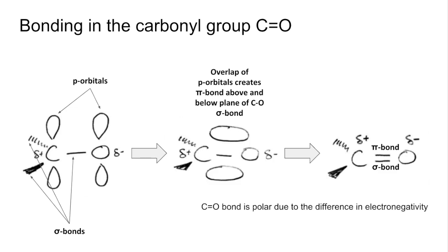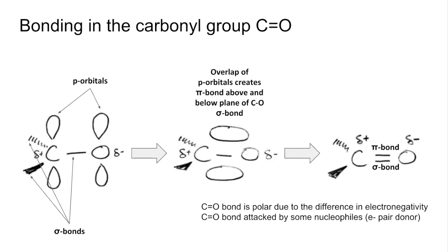The C double bond O is polar — notice the dipole shown across it. Oxygen is more electronegative than carbon and so has a greater share of the electron density, making it slightly negative while carbon is slightly positive. Because of that, the carbonyl bond is attacked by nucleophiles — a reminder that they are electron pair donors. And because we've got a double bond, addition takes place.